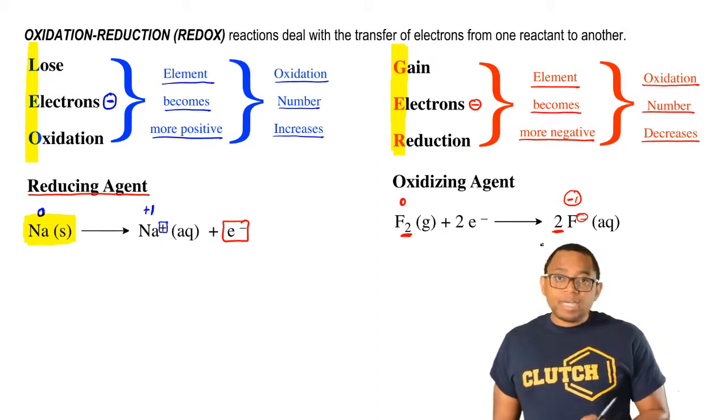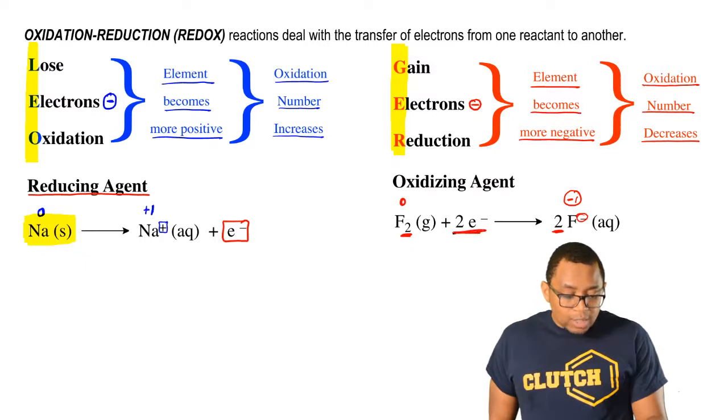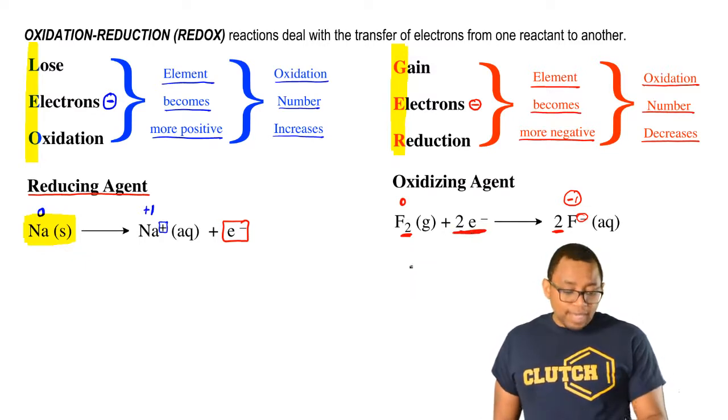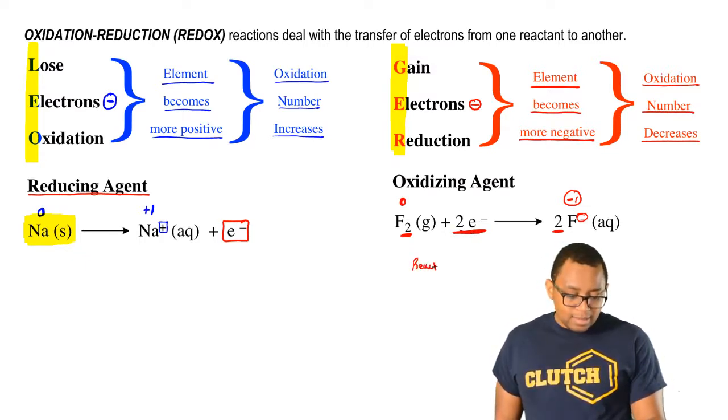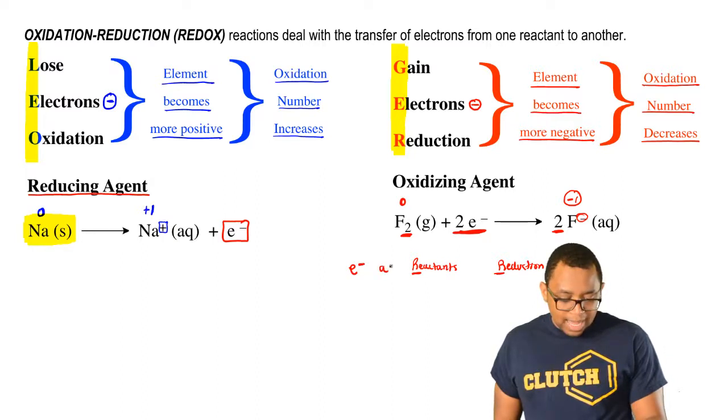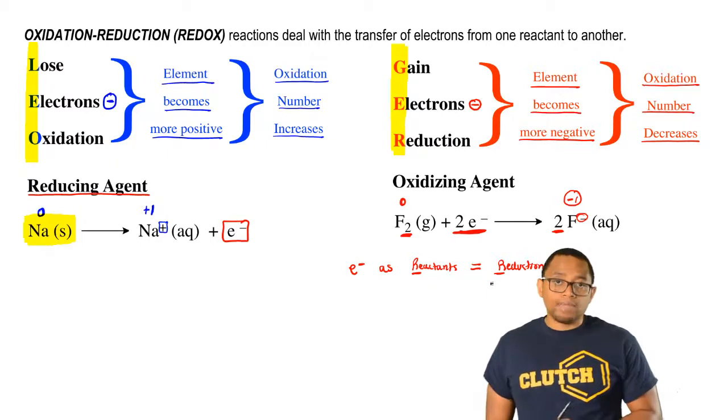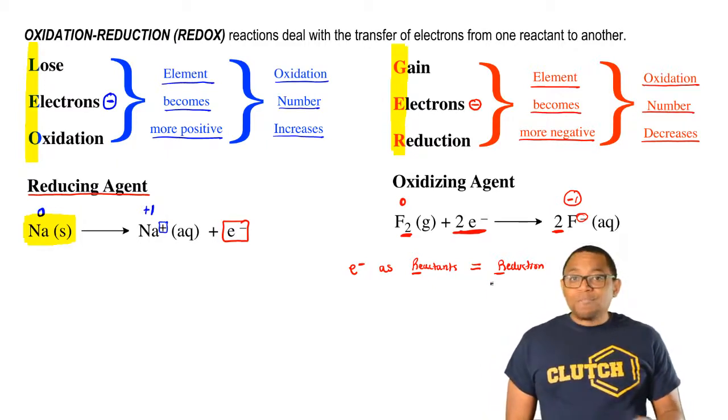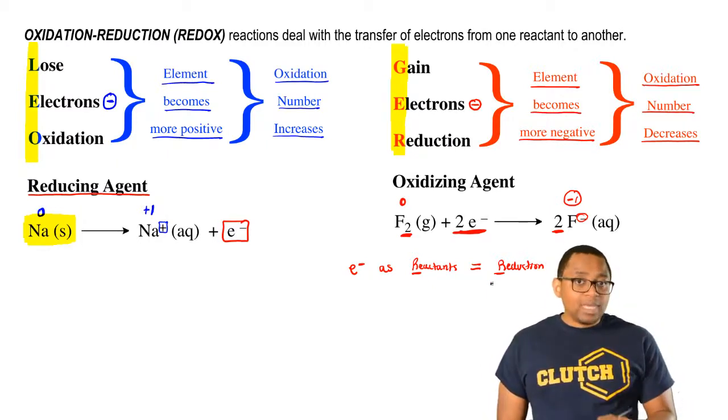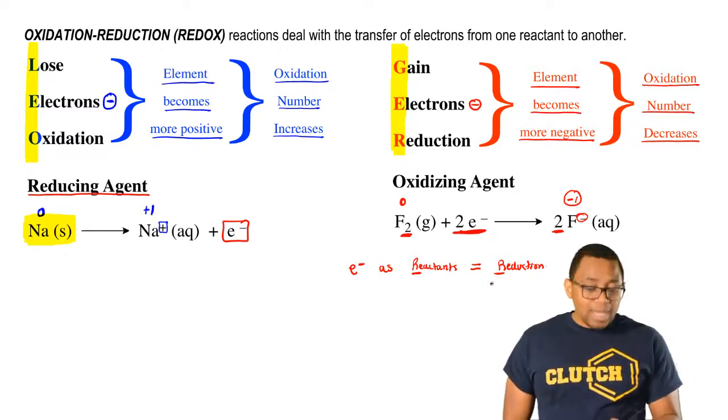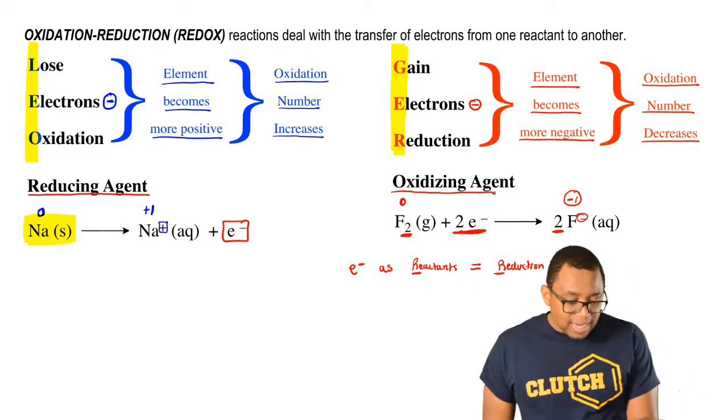Notice that if we're talking about reduction, your electrons are reactants. Reactants, reduction, R with R. Remember, electrons as reactants equals reduction. R goes with R. Finally, if you've been reduced, your agent will be the opposite. If you've been reduced, that means you are the oxidizing agent.